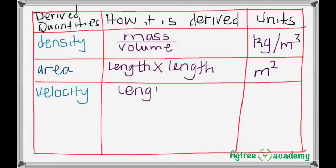Then, from area, we have velocity as another derived quantity, with the formula length divided by time. Hence, its derived units are the meters per second.